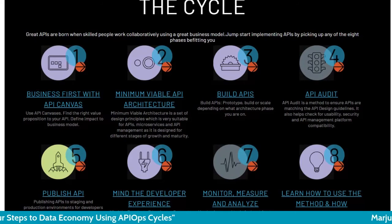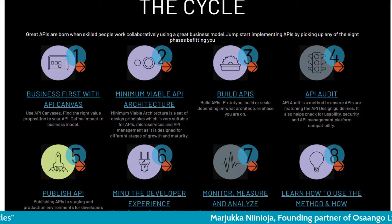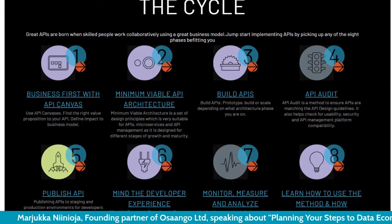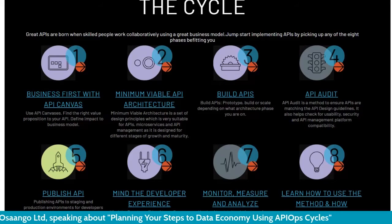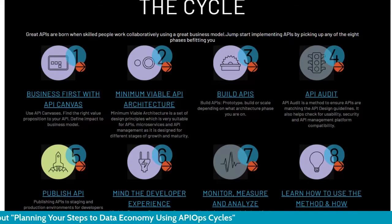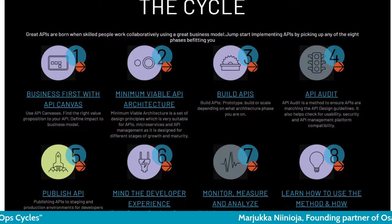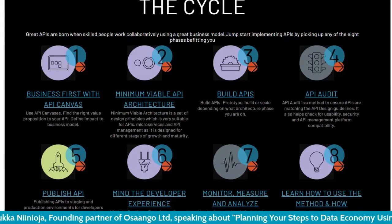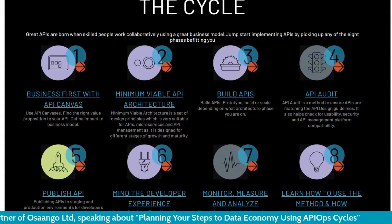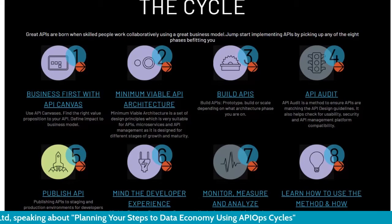After building, you move on to publishing the API, monitoring developer experience, measuring and analyzing, and then learning based on those results to decide what to do next and how to improve. This is the full cycle which you should iterate with your products. You can use this for strategic planning for API strategy, data strategy, or just to plan for one, two, or three APIs — and that's usually the best place to start, even for strategic thinking.